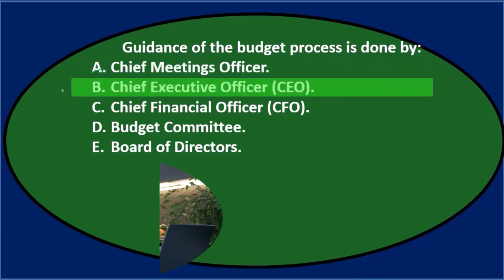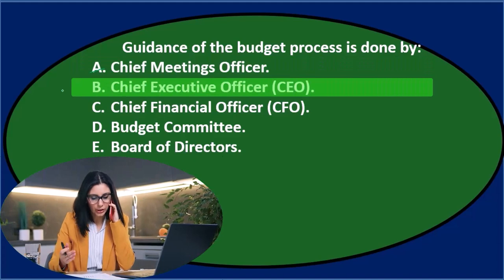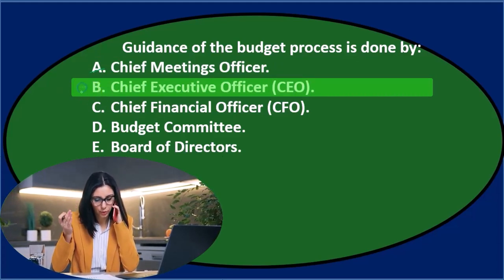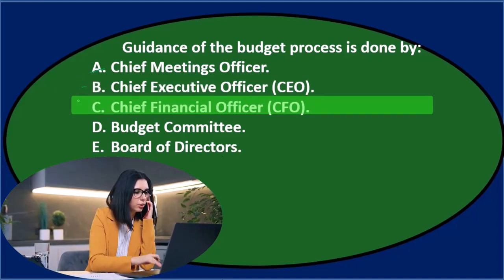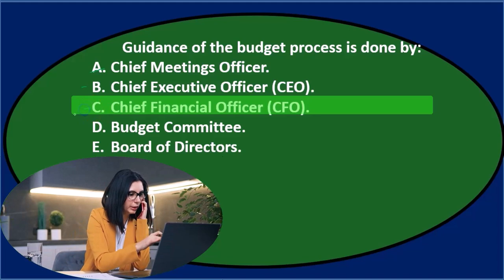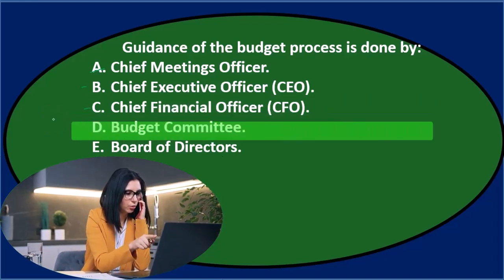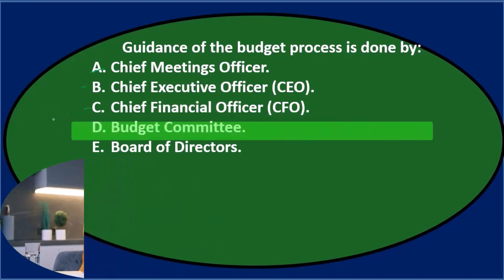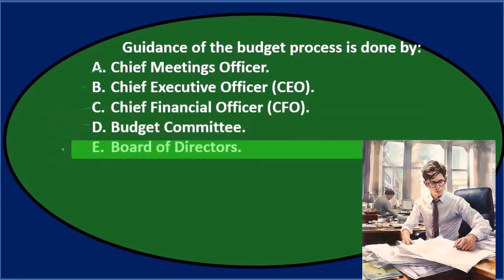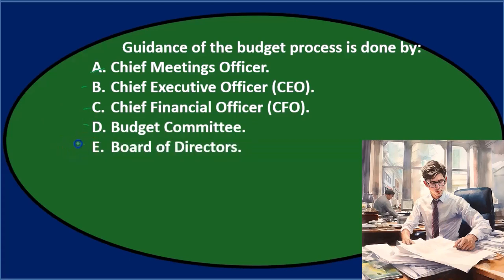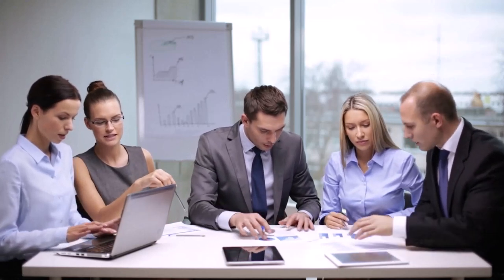B says Chief Executive Officer. Well, if the budget is really important, maybe that seems familiar. C says Chief Financial Officer. It's a financial type thing, so maybe we can think that that would be it. D says Budget Committee — that sounds familiar, I think we've dealt with something called the Budget Committee. And then the Board of Directors, also sounding pretty important. So all four of these sound like big people in the organization, and the budget is a big planning process and goal, so we might need to narrow that down.